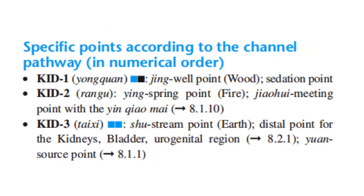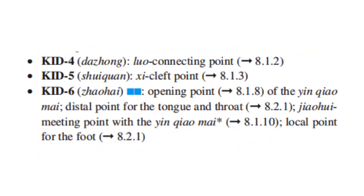Kidney 3 is the shu stream point and an earth point. It is the distal point for the kidneys, bladder, and urogenital region. It is also the yuan source point of the kidney. Kidney 4 is the luo connecting point. Kidney 5 is the xi cleft point.